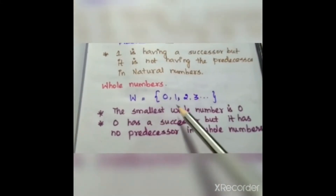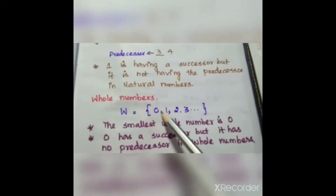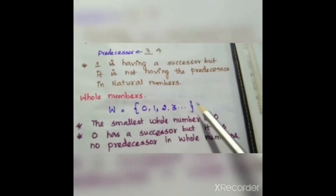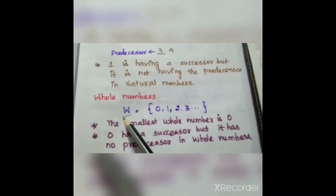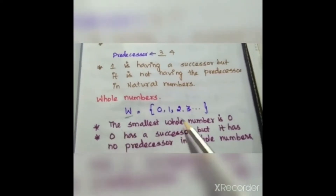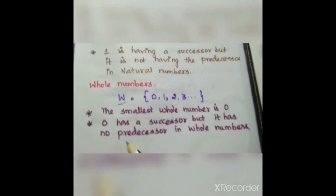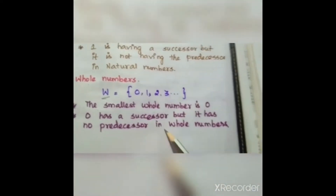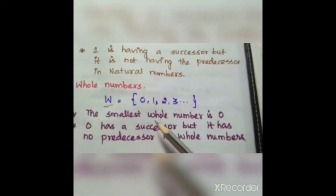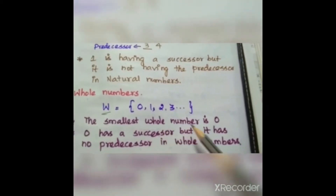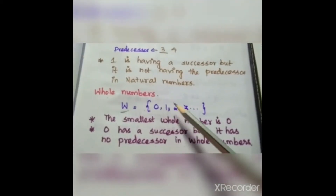If this collection includes 0 as well, then the collection 0, 1, 2, 3, and so on is called whole numbers, denoted by the letter W. The smallest whole number is 0. Zero has a successor but has no predecessor in whole numbers. So whole numbers are the set of natural numbers including 0. In this chapter we are going to learn about whole numbers.